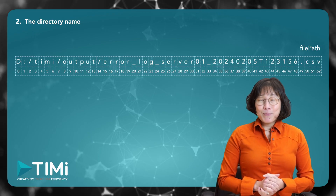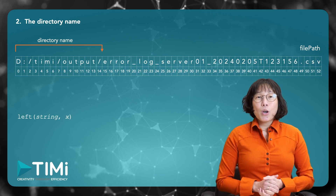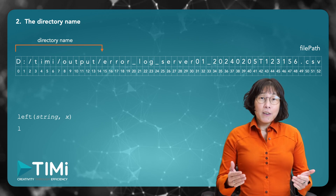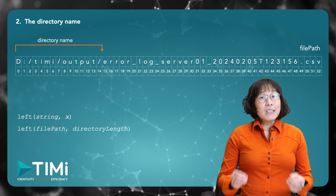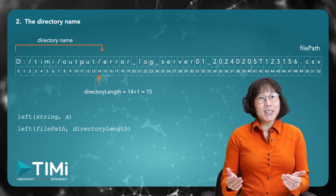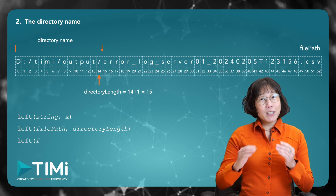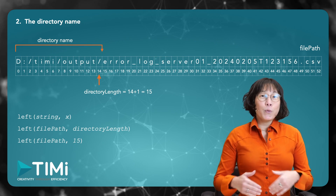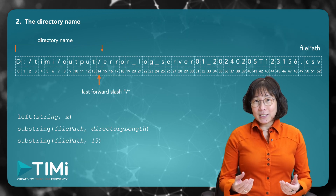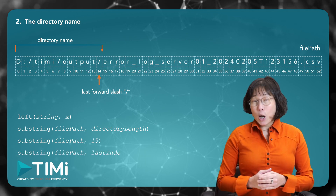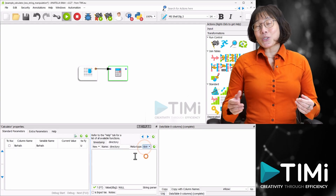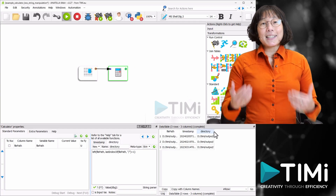To extract the directory name, we use the left function, which retrieves the first x characters of a string. The directory name ends at index 14, so the directory length will be 14 plus 1, which is 15. Thus, our formula retrieves the first 15 characters of file_path. However, a better dynamic approach is to find the last location of the forward slash plus 1. We create a new column called 'directory', change the metatype to string, and use this formula. This method accurately extracts the directory name.